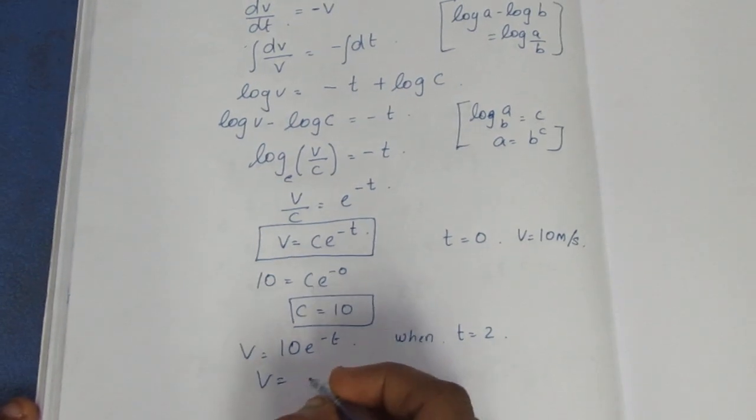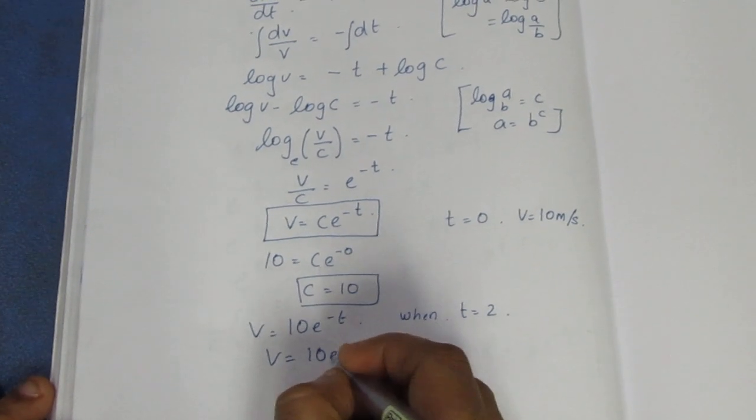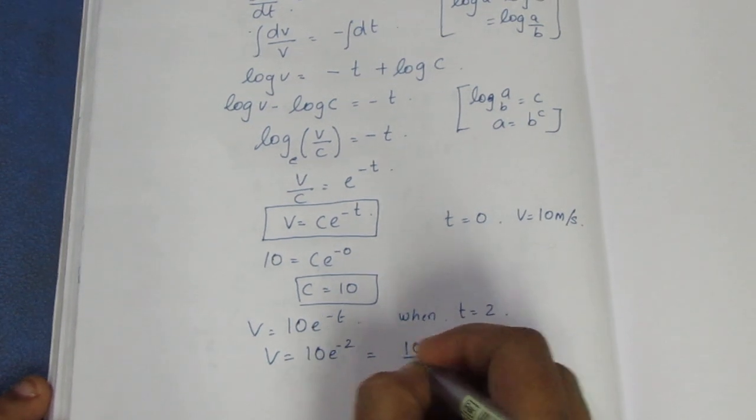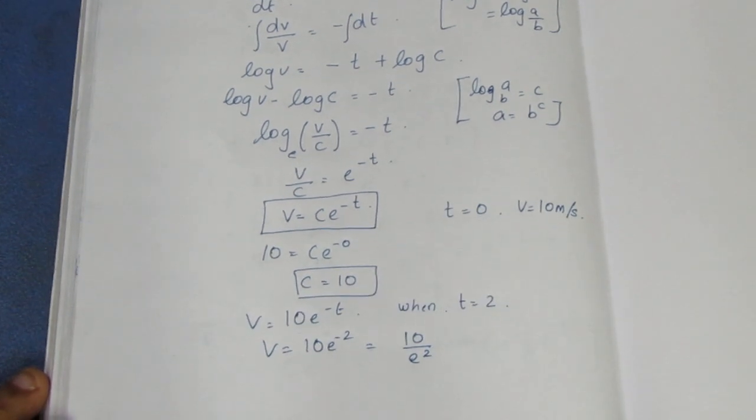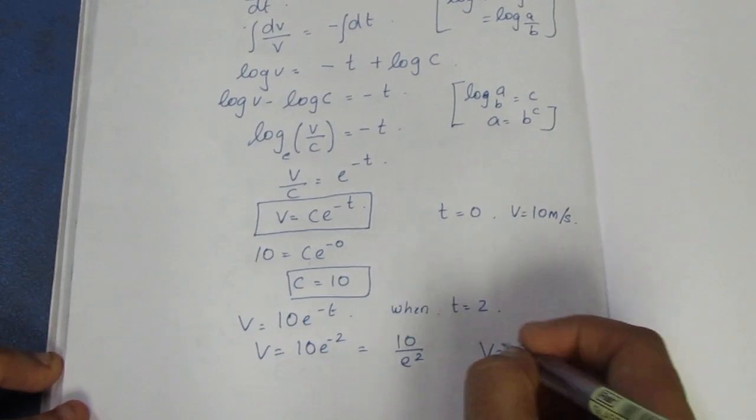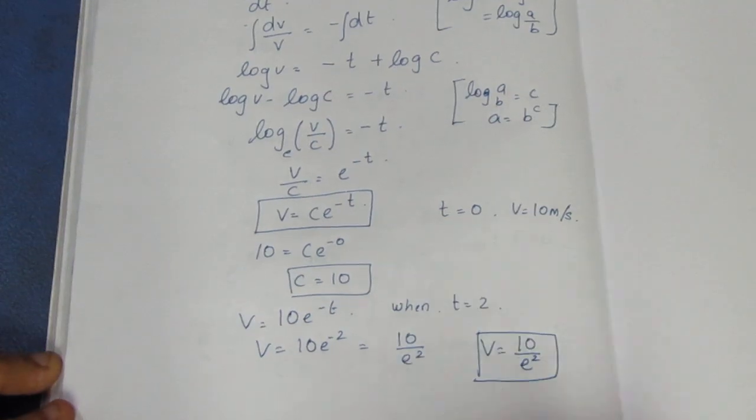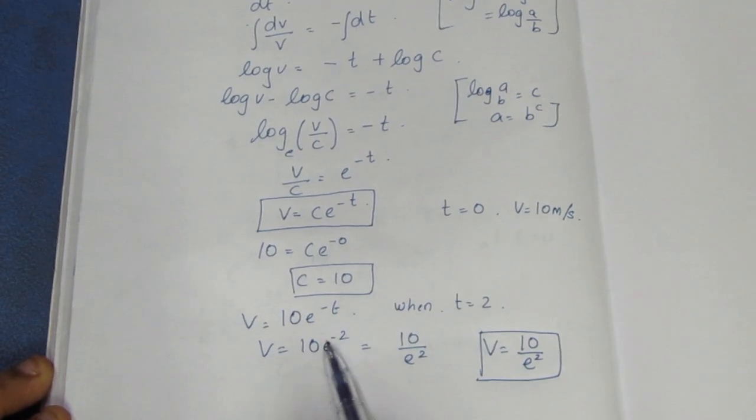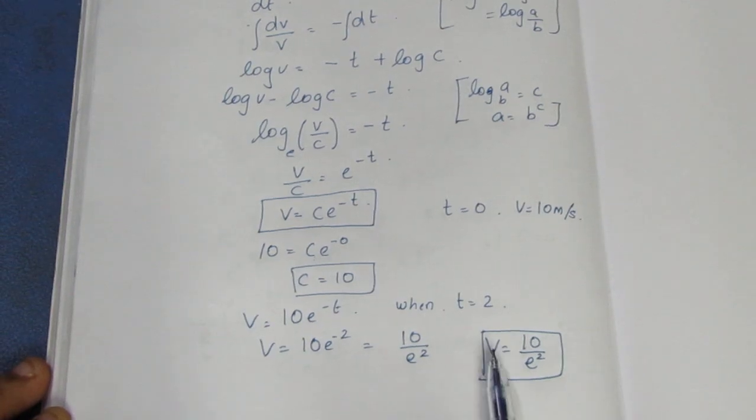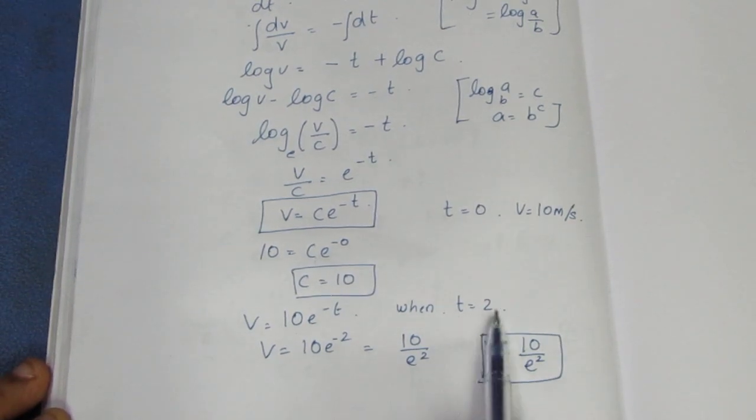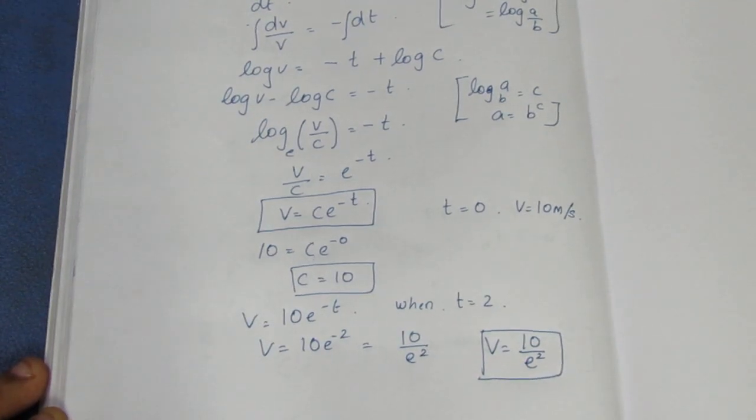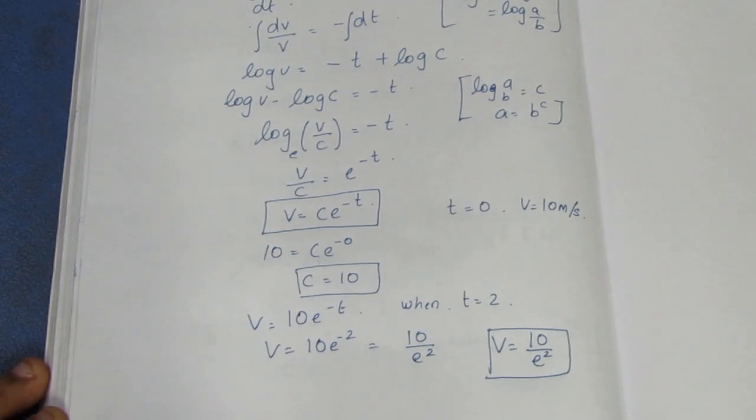Now at time t equals 2, v equals 10 times e to the power minus 2, which is 10 by e squared. So the final answer is velocity equals 10 by e squared when t equals 2. This is the final answer. Thank you.